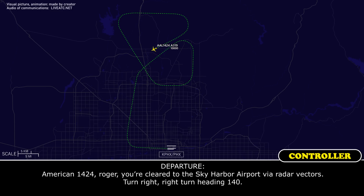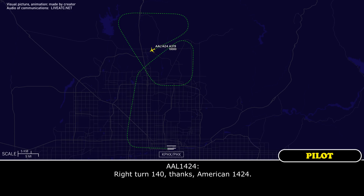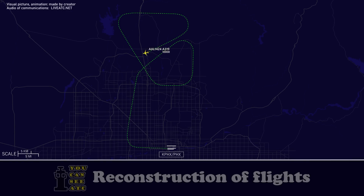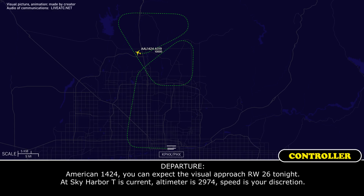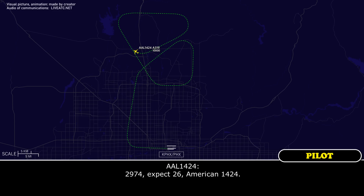American 1424, roger. You're cleared to Sky Harbor Airport via radar vectors. Turn right, heading 140. Right turn 140, thanks, American 1424. American 1424, you can expect a visual approach runway 26 tonight at Sky Harbor. Tango is current, altimeter 2974. Speed at your discretion. 2974, expect runway 26, American 1424.